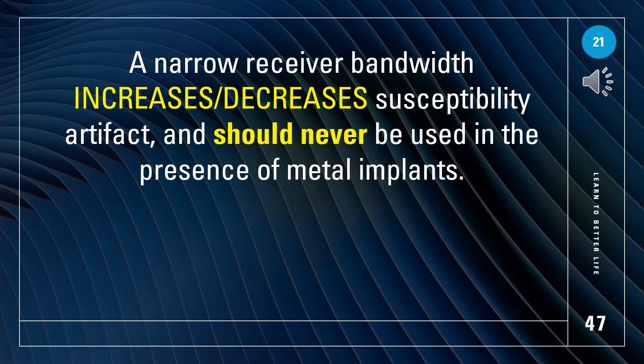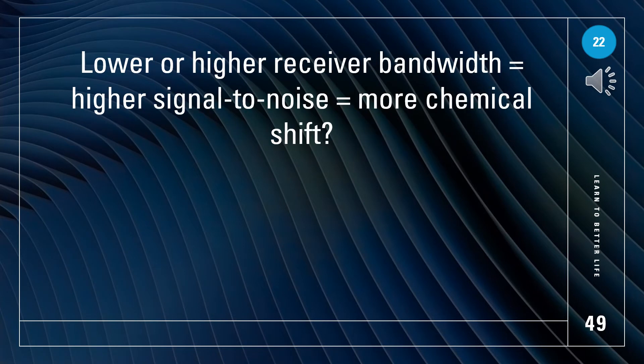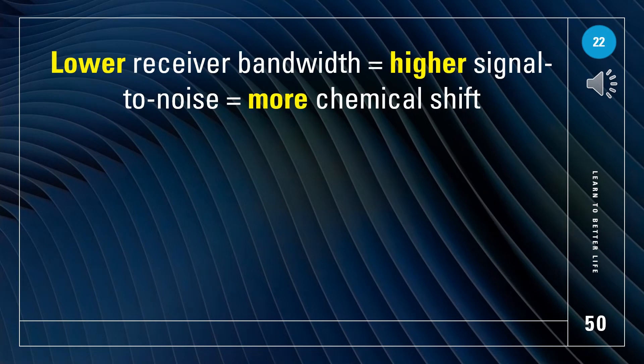A narrow receiver bandwidth increases susceptibility artifact and should never be used in the presence of metal implants. What are the effects of receiver bandwidth on signal-to-noise and chemical shift? Lower receiver bandwidth leads to higher signal-to-noise and more chemical shift.